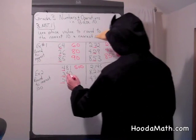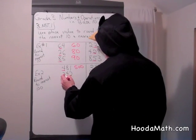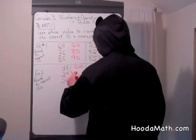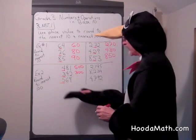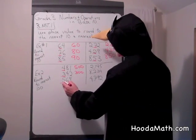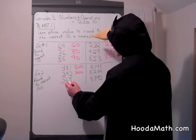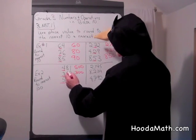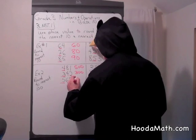For 342, the 4 is less than 5, so 300 remains 300. For 569, the number to the right of the 500 is a 6, larger than 5, so we round up to 600.